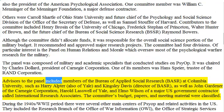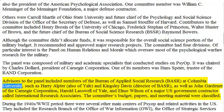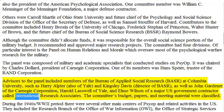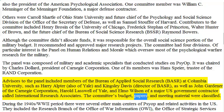Advisors to the panel included members of the Bureau of Applied Social Research (BASA) at Columbia University, such as Harry Alpert, also of Yale, and Kingsley Davis, director of BASA, as well as John Gardiner of the Carnegie Corporation, Harold Lasswell of Yale, and Elmo Wilson of a major US government contractor called International Research Associates. The committee's budget, papers, and meeting material were classified.